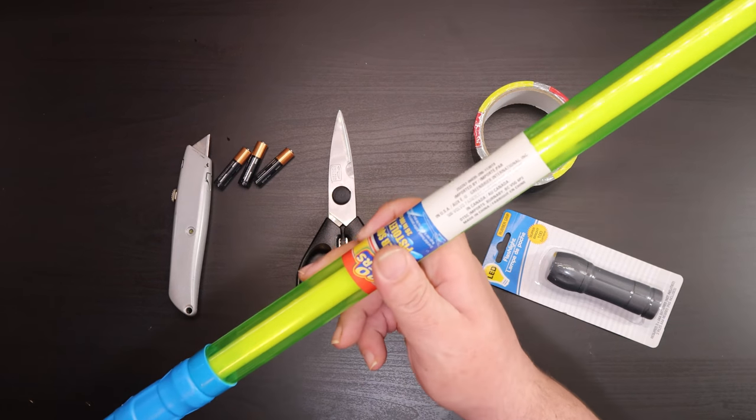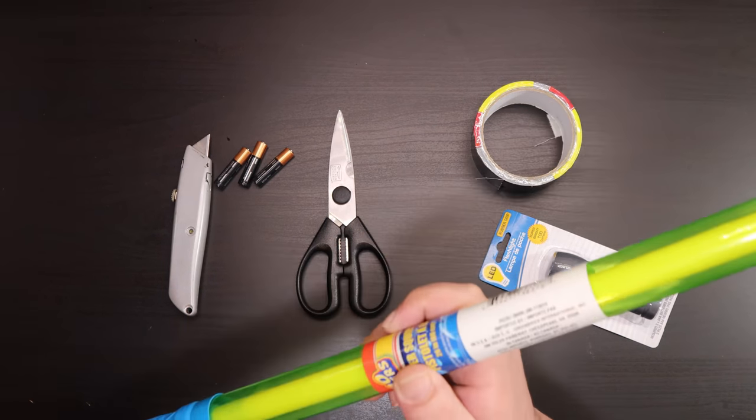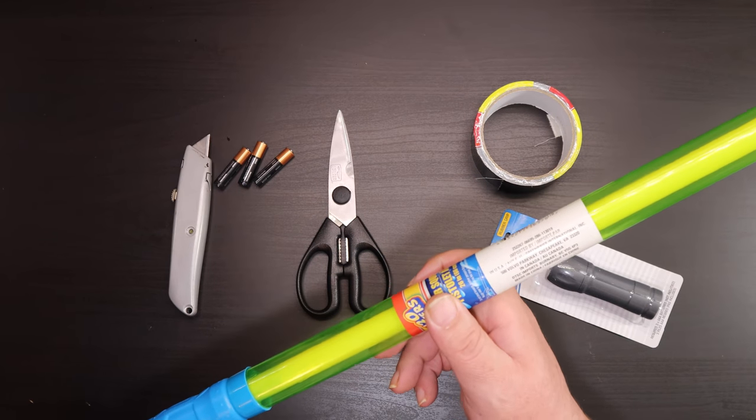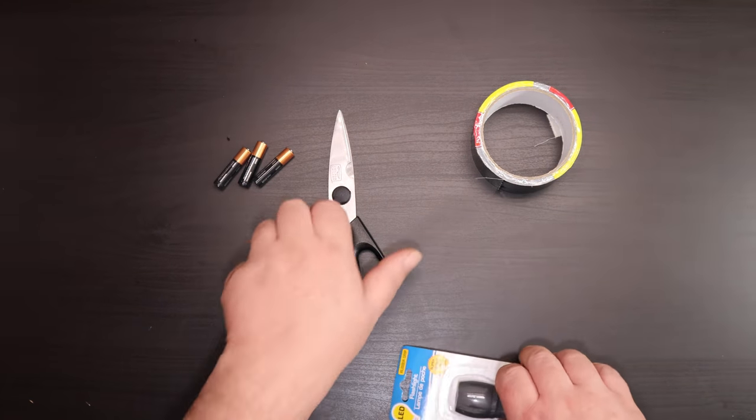So with just a few modifications we're going to be able to turn this H2O blaster into an economical light stick for nighttime light painting and photography. So let's go ahead and get started.